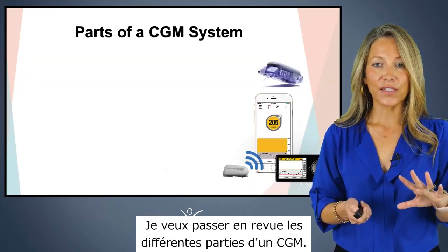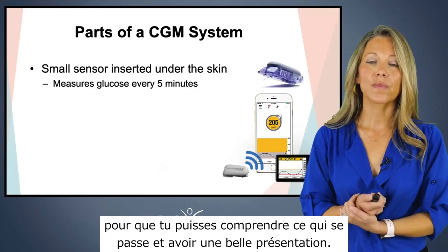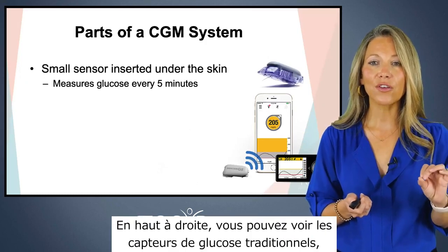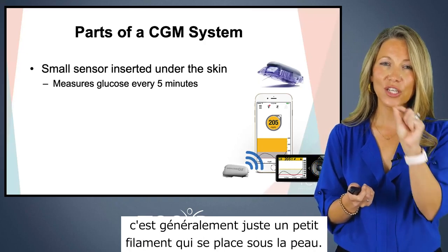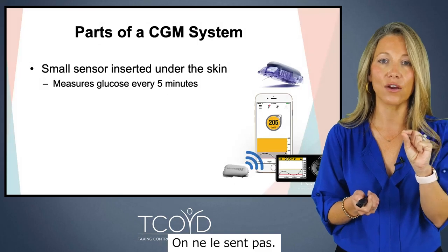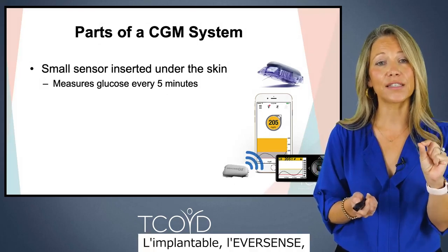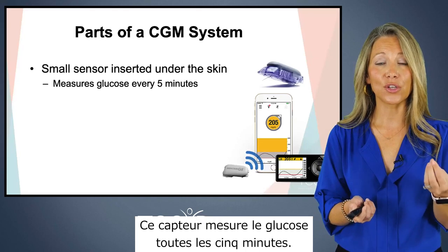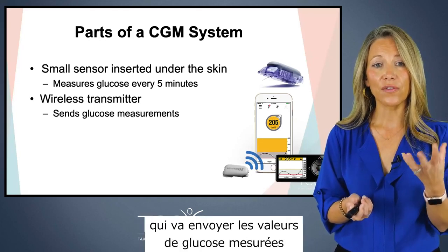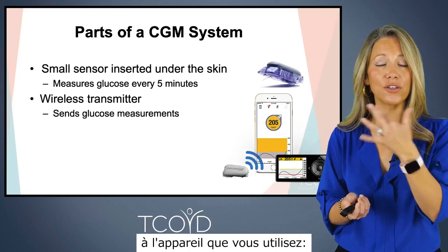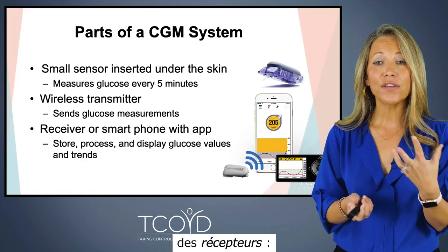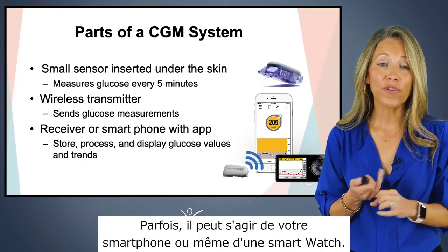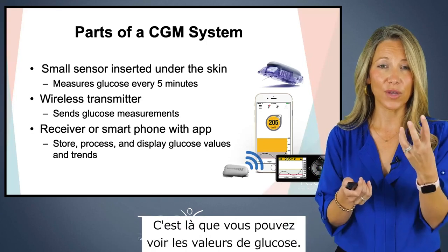Let's talk about the various parts of a CGM. In a continuous glucose monitor, there's a small sensor inserted under the skin — usually just a little wire you can't feel. For the implantable Eversense, it's inserted in a simple office procedure. That sensor measures glucose every five minutes. Then there's a transmitter that sends the glucose values to whatever device you're using — a receiver device the company provides, your smartphone, or even a smartwatch. That's where you view the glucose values.